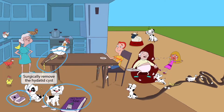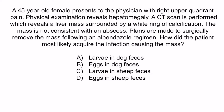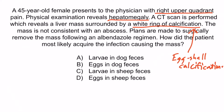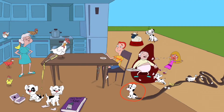Now let's do a question to apply what you've learned. A 45-year-old female presents with right upper quadrant pain. Physical examination reveals hepatomegaly. A CT scan reveals a liver mass surrounded by a white ring of calcification. The mass is not consistent with an abscess. Plans are made to surgically remove the mass following an albendazole regimen. How did the patient most likely acquire the infection? From the question stem, this patient has Echinococcus granulosus — right upper quadrant pain, hepatomegaly, a liver mass with eggshell calcification, and the albendazole-first surgical regimen. The answer is choice B: eggs in dog feces. The dog leaves behind a poopy stain, the chicken lays eggs in it, and the grandpa eats those eggs — representing that humans get the parasite by eating eggs found in dog feces.